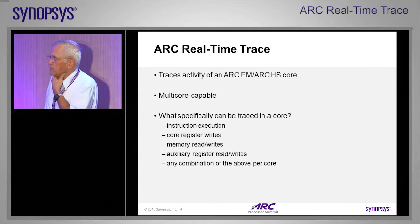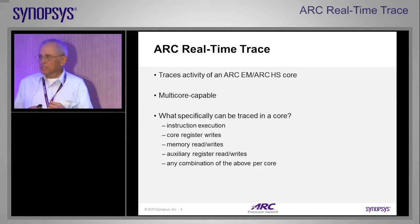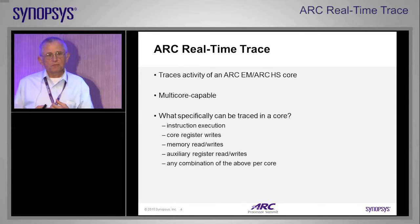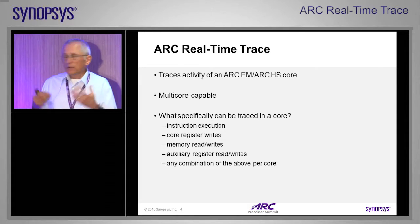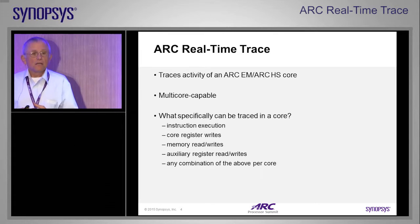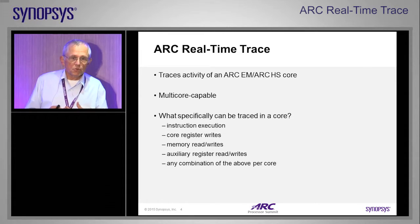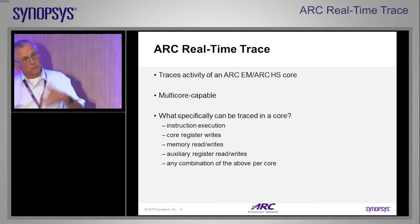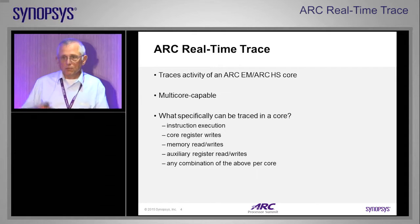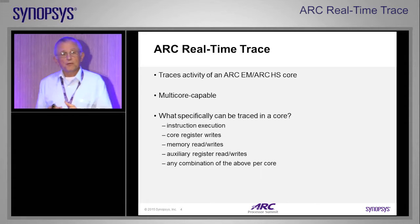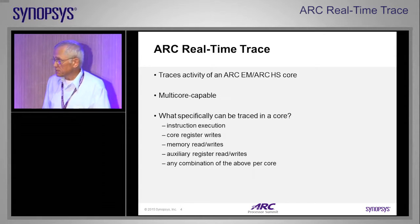So what is the ARC capable of tracing? We have two cores we can connect trace to, the ARC EM and the ARC HS cores, and the trace module is capable of tracing either one. In fact, it's capable of tracing any number of those cores together in a multi-core configuration, so you can have some EM cores, some HS cores, and have trace gathered from all of them.